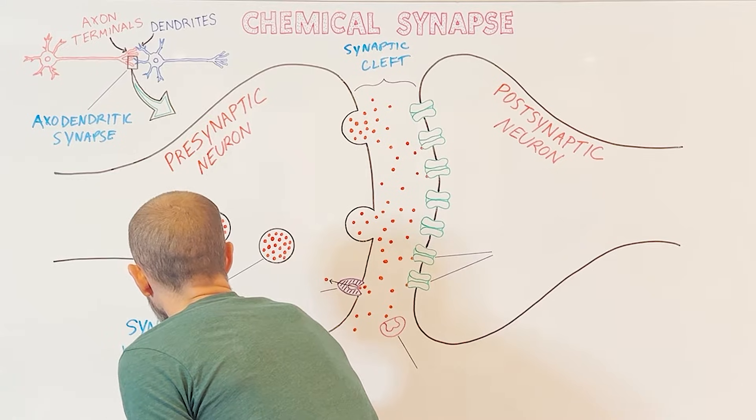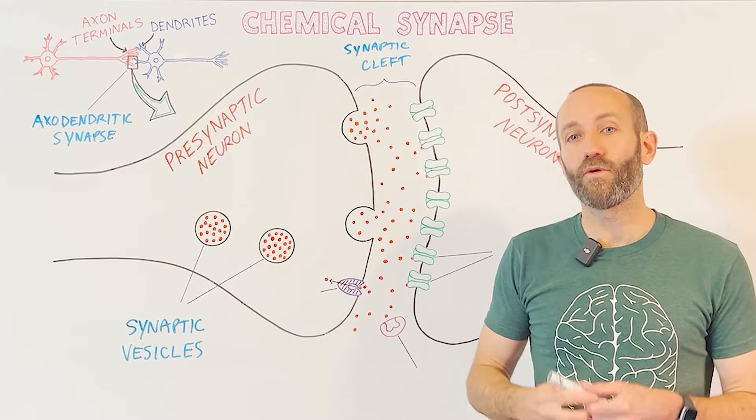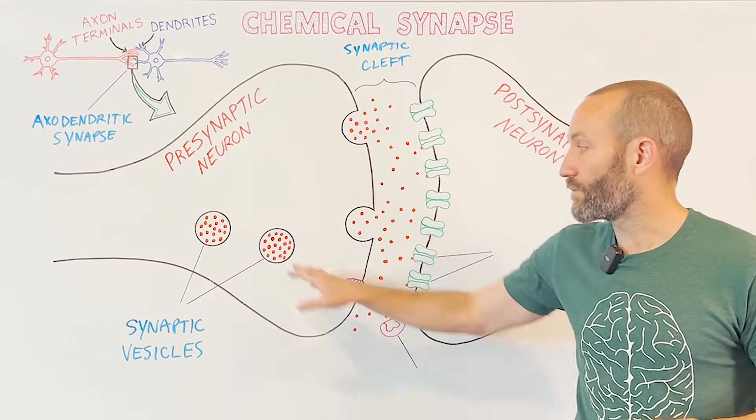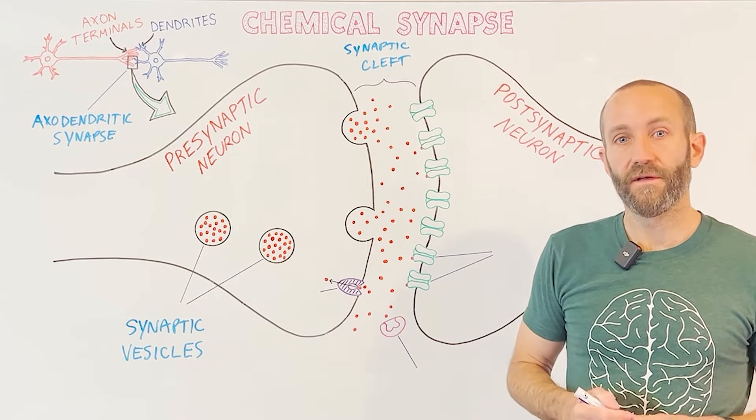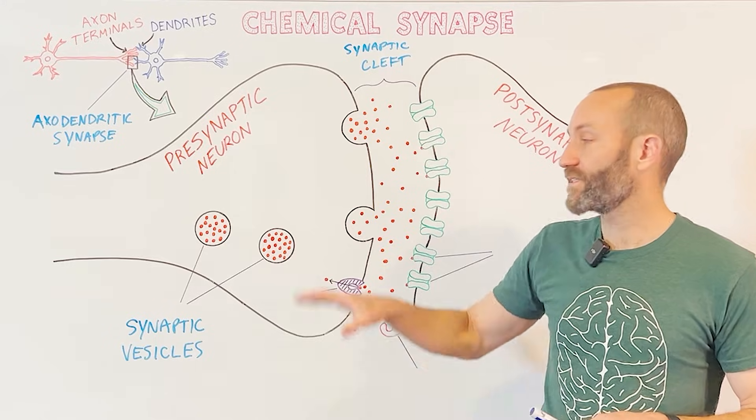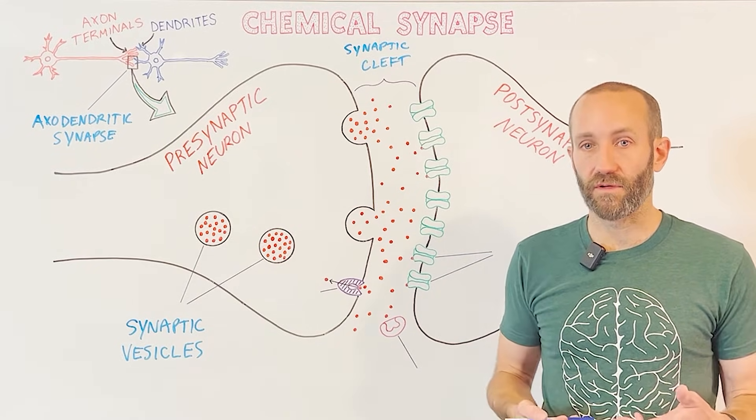And so that's what these large circular structures represent here. Synaptic vesicles are tiny sac-like organelles that contain neurotransmitter molecules, and that's what the little red dots here represent, neurotransmitter molecules. There are usually around 100 to 200 vesicles in each axon terminal of a presynaptic neuron, and each vesicle typically contains thousands of neurotransmitter molecules.